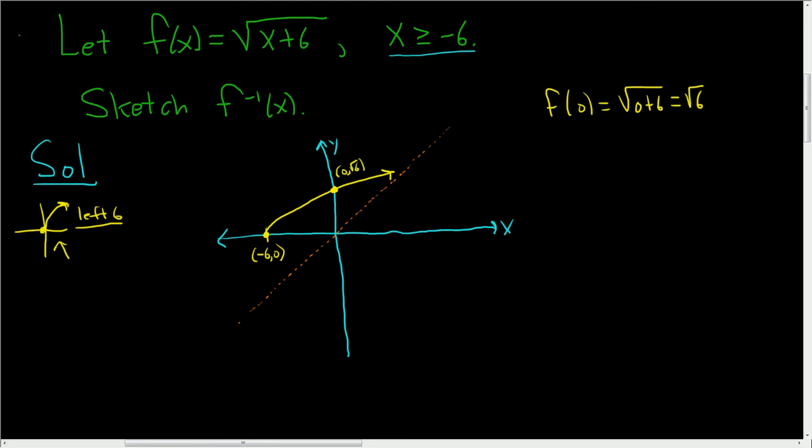A function and its inverse also swap domain and range. So the x becomes the y, and the y becomes the x. So instead of negative 6, comma 0, we're going to have 0, negative 6.